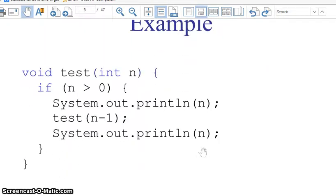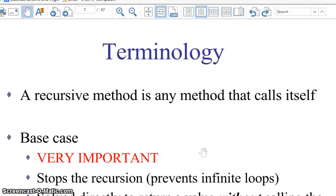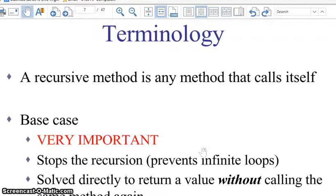And here is an example that he's given that's kind of a generic example. But I want to go to the terminology really quickly here, and then we'll look at an example. So a recursive method is any method that calls itself.